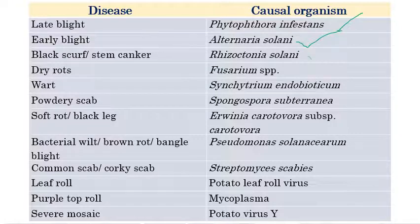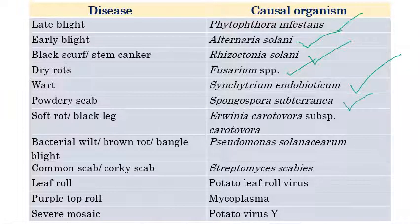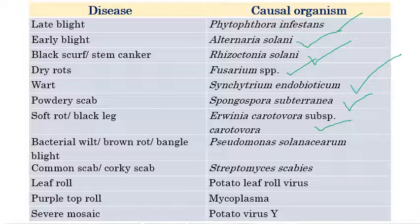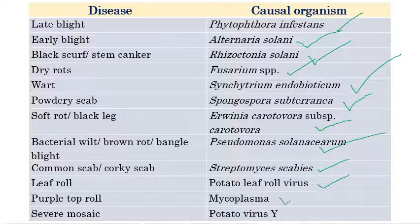Black scurf or stem canker is caused by Rhizoctonia solani. Dry root rot is caused by Fusarium species. Wart disease is caused by Synchytrium endobioticum. Powdery scab is caused by Spongospora subterranea. Soft rot or black leg is caused by Erwinia carotovora subspecies carotovora. Bacterial wilt or brown rot or Bengali blight is caused by Pseudomonas solanacearum. Common scab or corky scab is caused by Streptomyces. Leaf roll is caused by potato leaf roll virus. Purple top roll is a mycoplasmal disease, and severe mosaic is caused by potato virus Y.